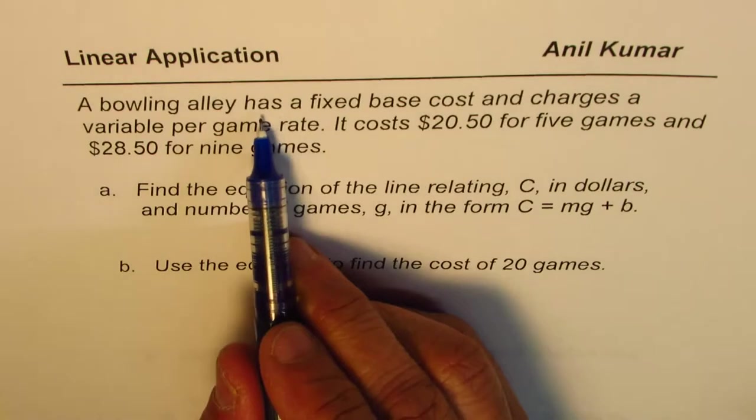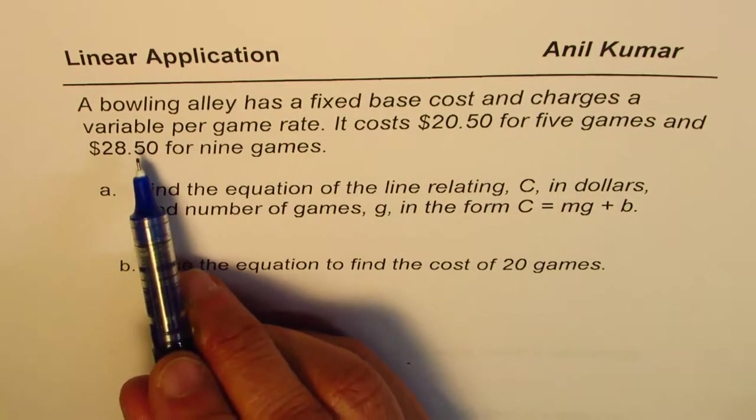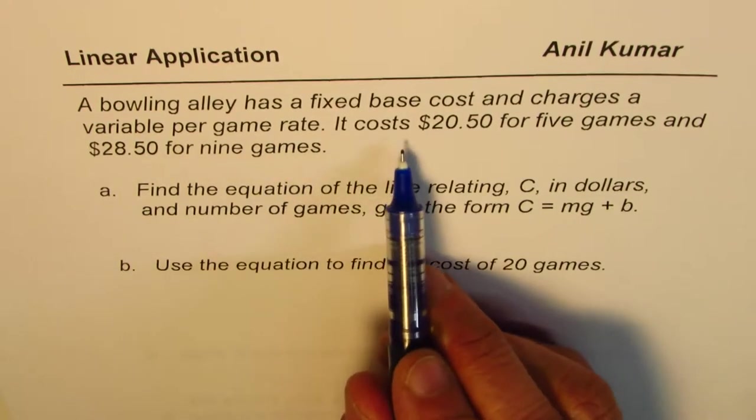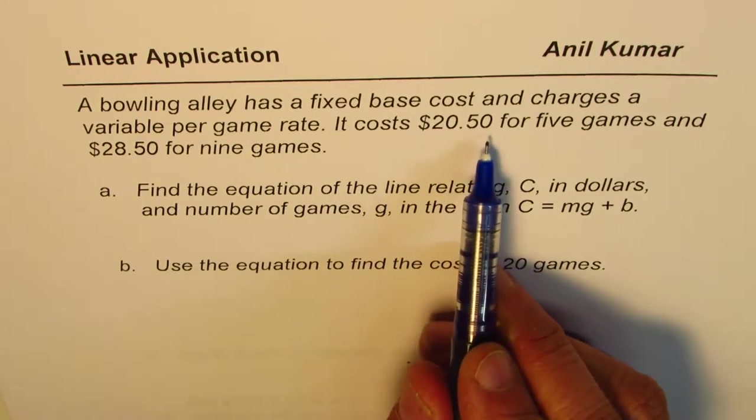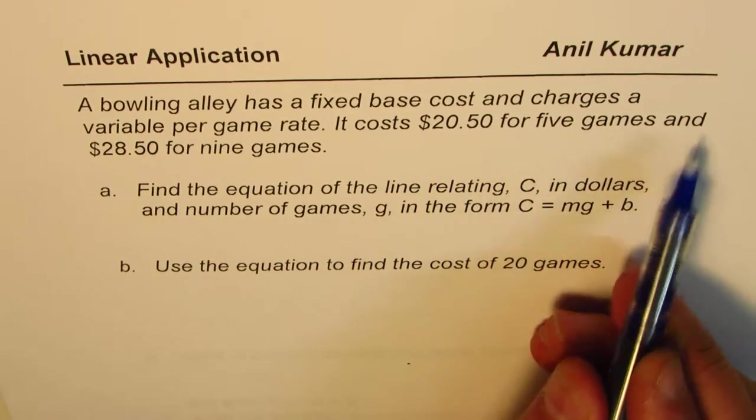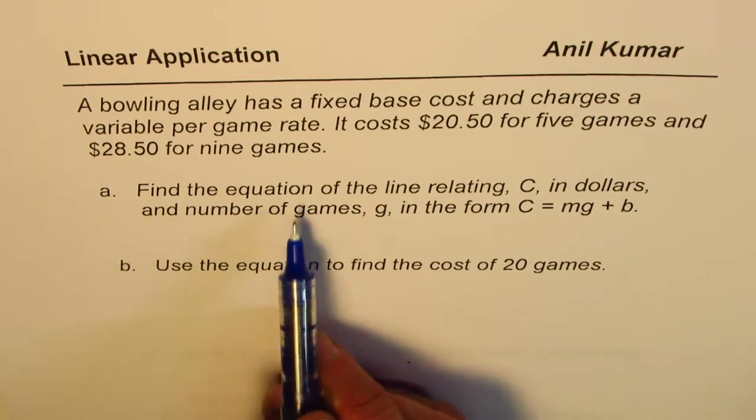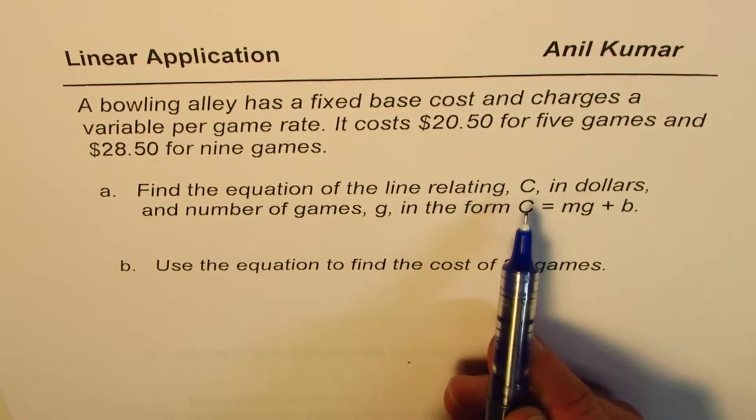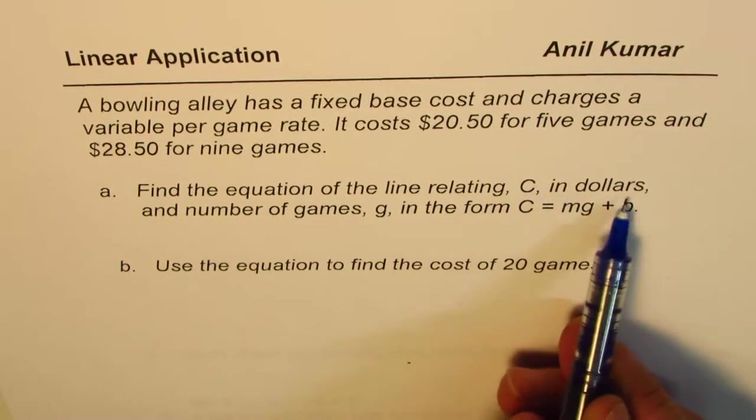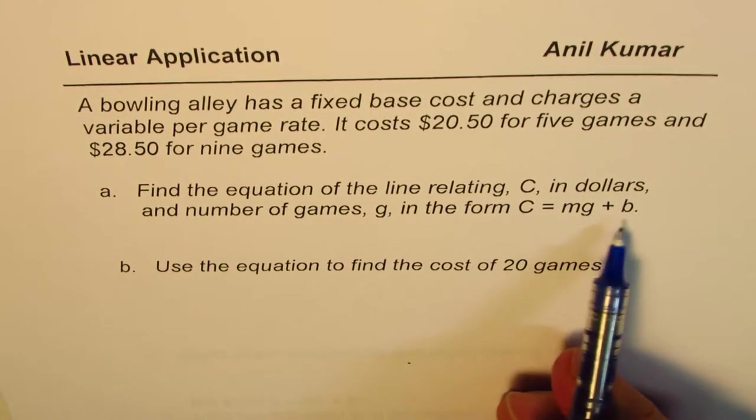A bowling alley has a fixed base cost and charges a variable per game rate. It costs $20.50, that means $20.50, for 5 games and $28.50 for 9 games. Find the equation of the line relating C in dollars - C is the cost - and the number of games G in the form C equals mg plus b.